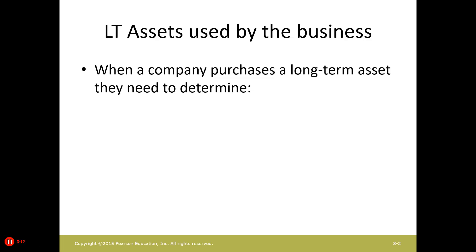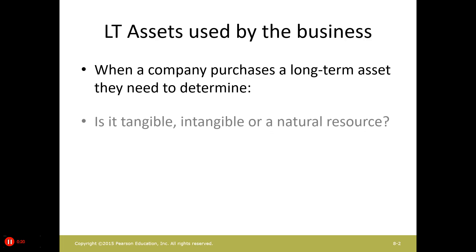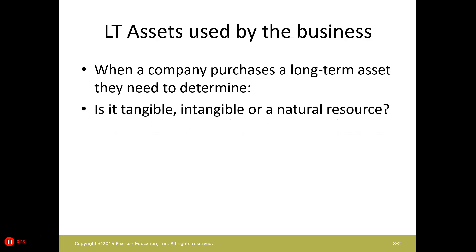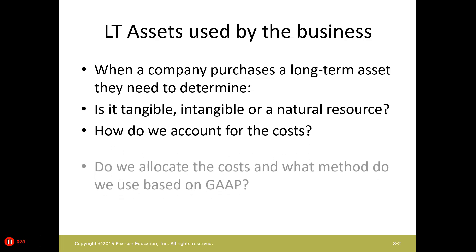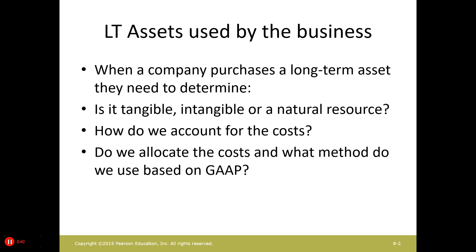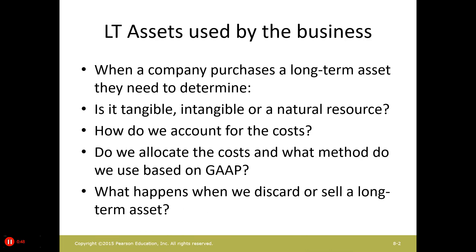When a company purchases a long-term asset — and remember, we're talking about long-term assets that are used by the business — we need to first determine: is it tangible, intangible, or a natural resource? Tangible means we can see and touch it; intangible means we can't; or a natural resource, such as land purchased because there are diamonds in the ground. How do we account for the cost? We figure out whether we allocate the cost and what method to use. Then we look at what happens when we discard or sell long-term assets.